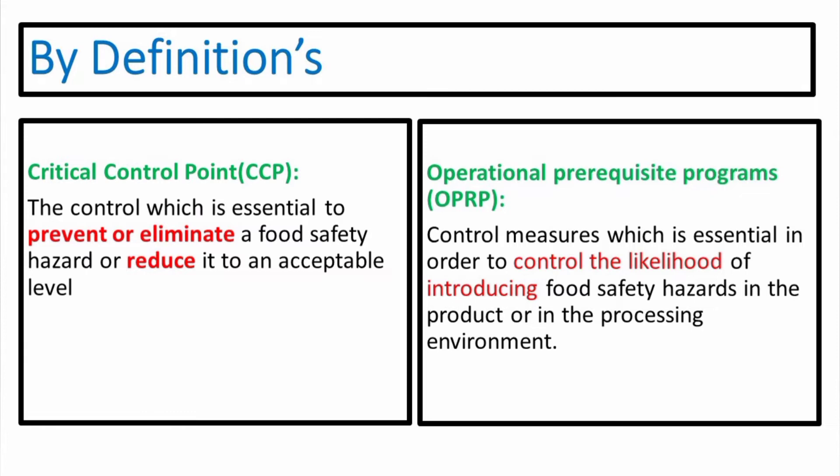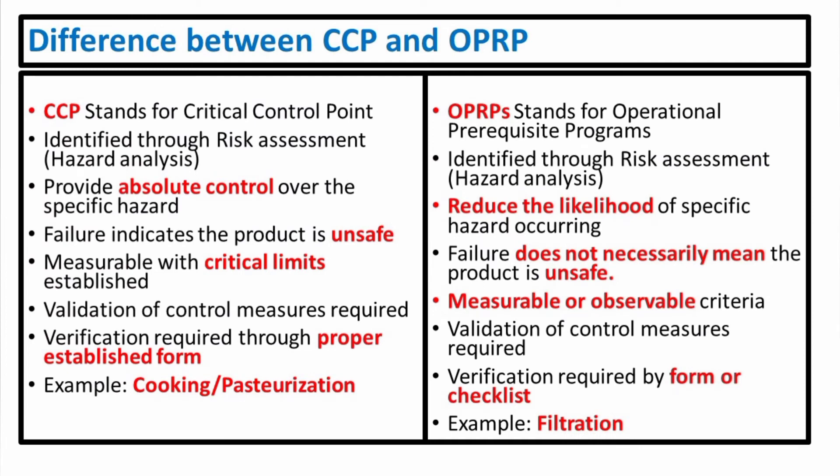Now we come to the next slide: the difference between CCP and OPRP. CCP stands for Critical Control Point, while OPRP stands for Operational Prerequisite Program. CCP is identified through risk assessment and hazard analysis; OPRP is also identified through risk assessment and hazard analysis.